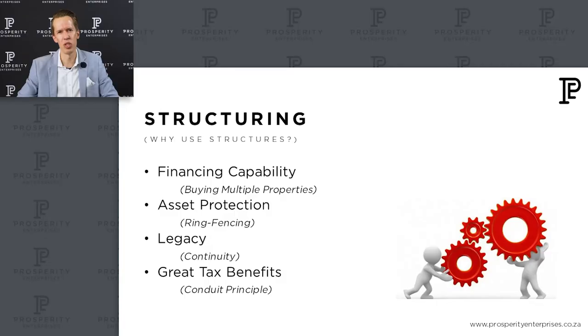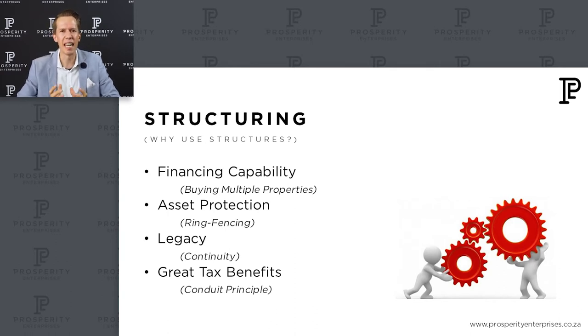The second reason why the correct structuring is so important — and especially trust structuring — is for asset protection. Imagine you've got one basket and in that basket you've got apples, and one of those apples starts going rotten. All the other apples could be affected. But if you have multiple baskets and an apple in one basket goes rotten, it does not necessarily affect the other apples in the other basket. That is what asset protection is about.